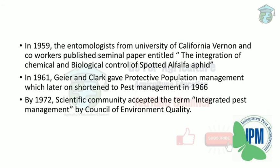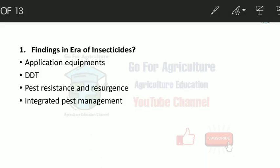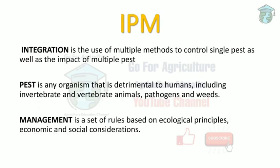In 1959, entomologists from the University of California — Stern and co-workers — published a seminal paper titled 'The Integration of Chemical and Biological Control of Spotted Alfalfa Aphid.' In 1966, this was shortened to 'pest management,' and in 1972 the Council on Environmental Quality accepted the term IPM. The findings of the insecticide era include: application equipment in the 20th century, DDT, pest resistance, pest resurgence, and the formal acceptance of the IPM term.